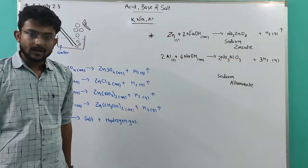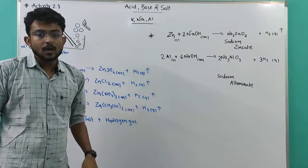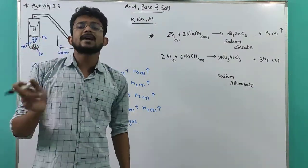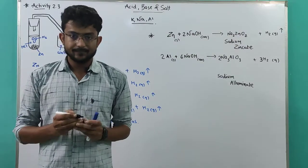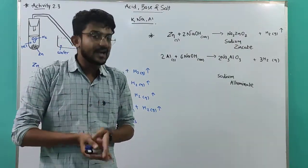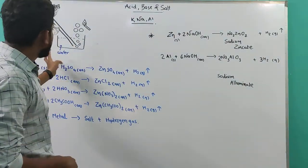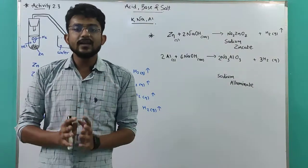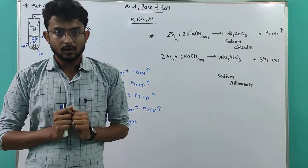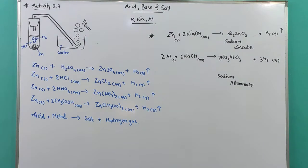So the reaction is: base + active metal → complex salt + hydrogen gas. We completed topic 2.1.1: How do acid and base react with metal. Now we move to: How do metal carbonate and metal hydrogen carbonate react with acid?